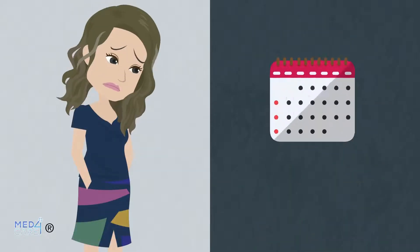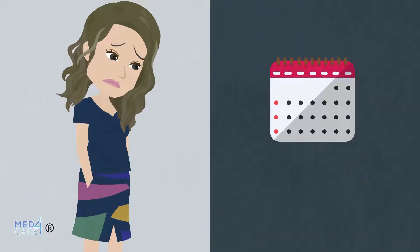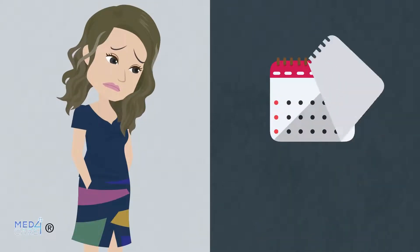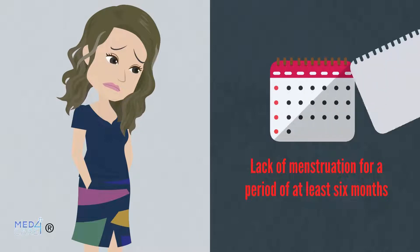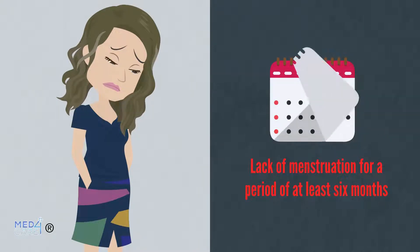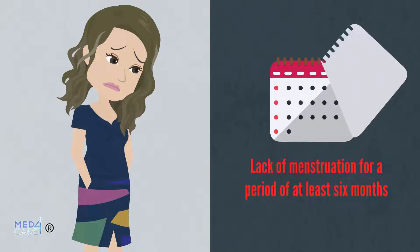In secondary amenorrhea, on the other hand, there is the presence of a lack of menstruation for a period of at least 6 months from the last menstrual cycle.